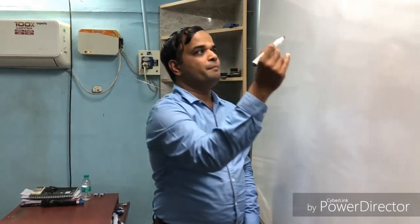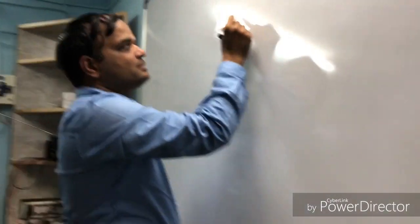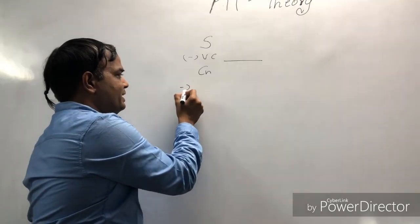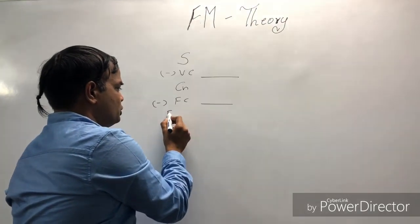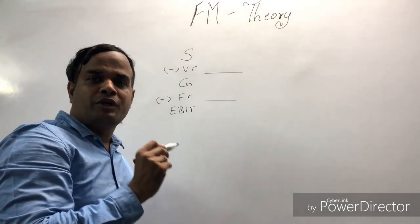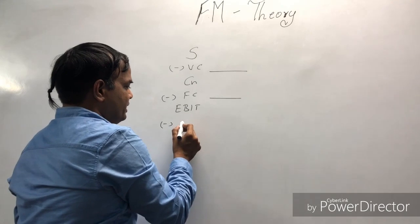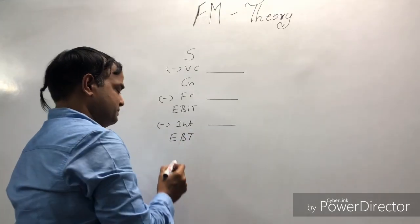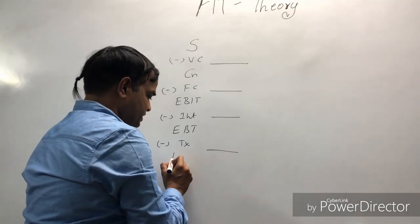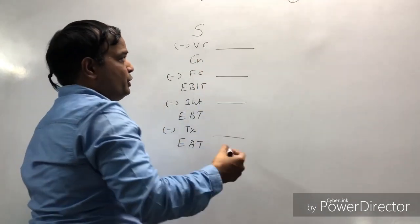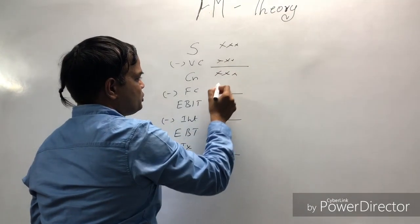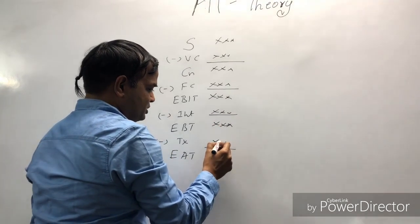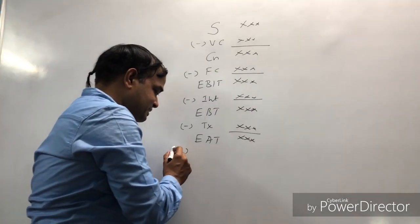Sales minus variable cost is called contribution. Less fixed cost is equal to EBIT — earnings before interest and tax. Less interest is equal to earnings before tax. Less tax is equal to earnings after tax. So the format is: Sales − Variable Cost = Contribution − Fixed Cost = EBIT − Interest = EBT − Tax = EAT.